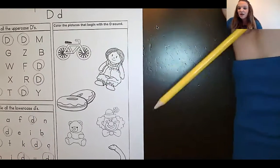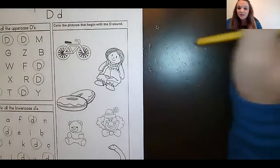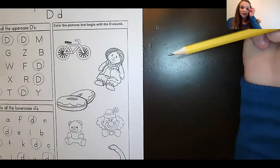Then on this side over here, it says color the pictures that begin with the letter D. So let's go ahead and X and circle and then we'll go back and color.